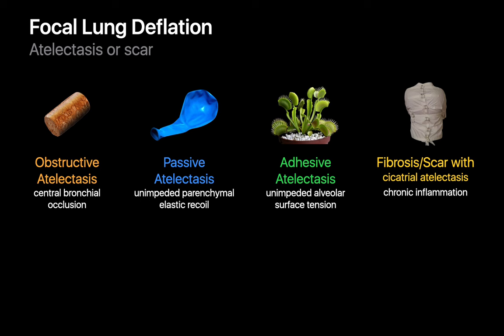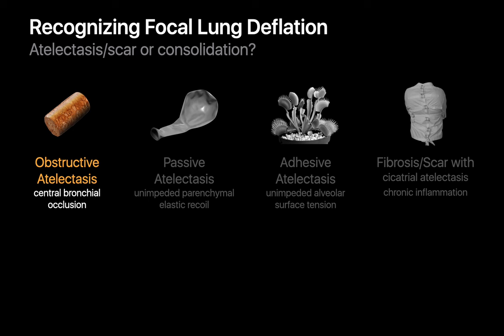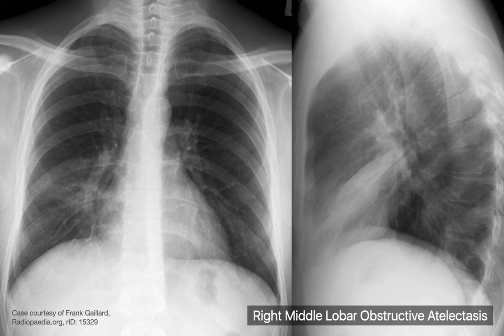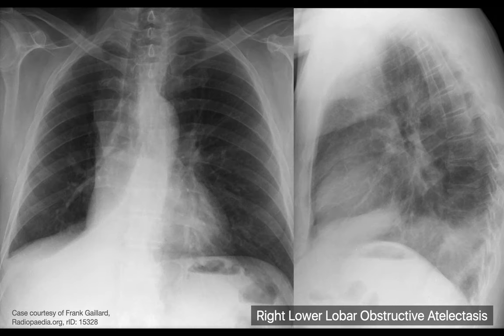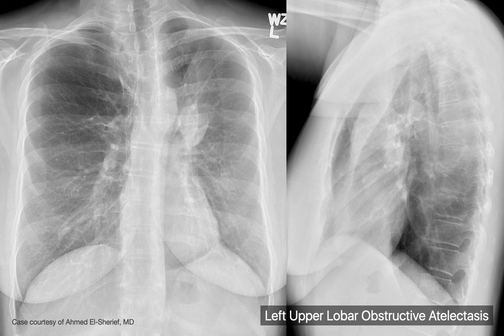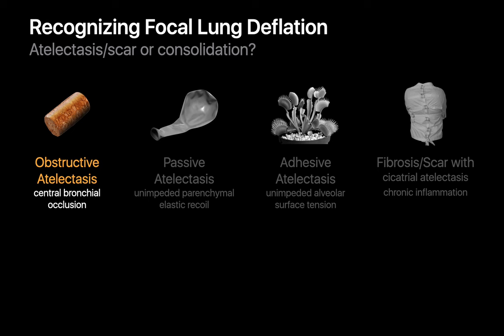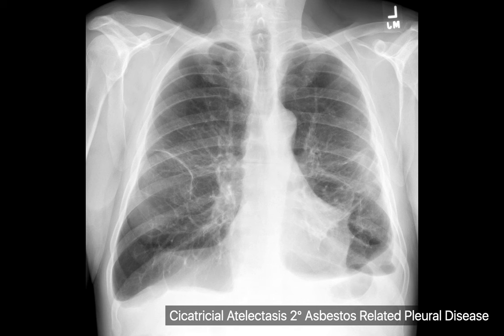The customary appearance of focal lung deflation in obstructive atelectasis is probably the most reliably recognized on chest x-rays, taking one of five familiar patterns: right upper lobe, right middle lobe, right lower lobe, left upper lobe, and left lower lobe collapse patterns. Cicatricial atelectasis and scar can also be relatively reliably recognized, often appearing as dense linear bands or wedge-shaped opacities with local architectural retraction, such as the linear bands in this patient with asbestos-related pleural disease.